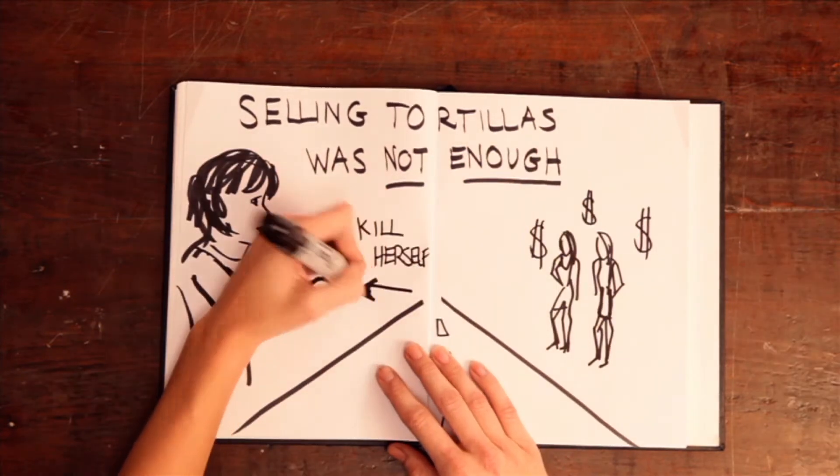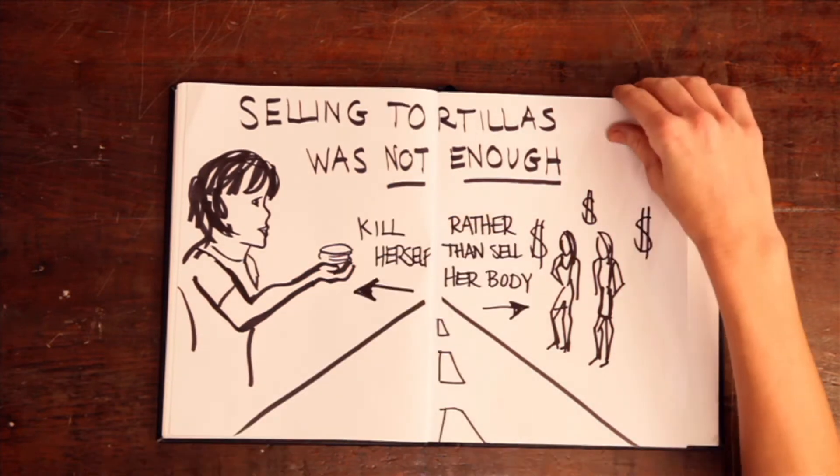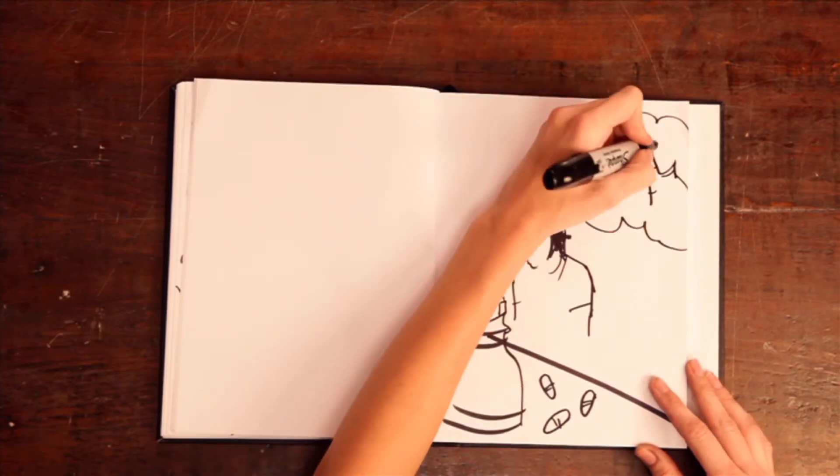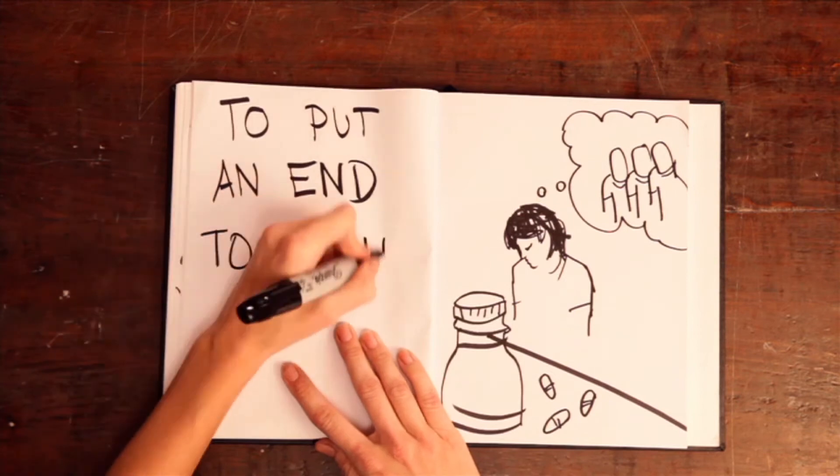But at the cost of selling themselves. Preferring to kill herself rather than sell her body, Maria bought pills and planned to end her life and the lives of her three brothers to put an end to their reality.